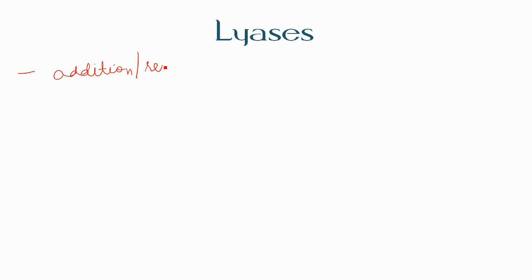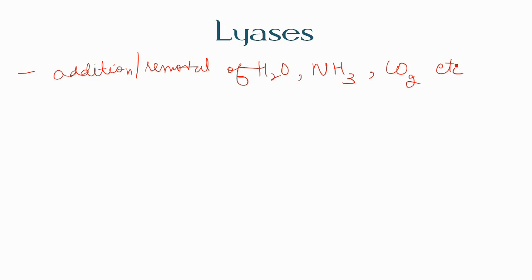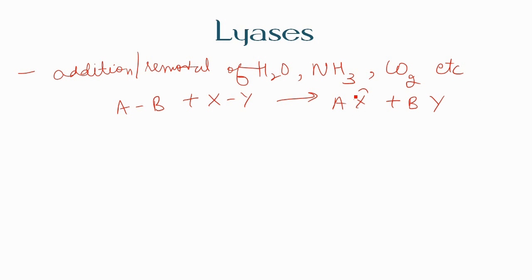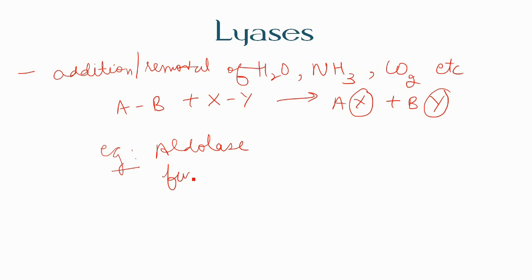The next category is lyases — enzymes specialized in addition or removal of water, ammonia, carbon dioxide, etc. An example reaction: AB + XY → AX + BY, where X is being added to A and Y is being added to B. Examples of lyases include aldolase and fumarase.